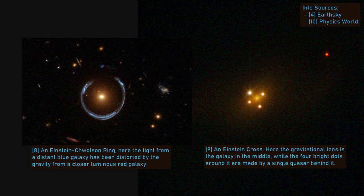However, if the three objects are not in perfect alignment, we see partial arcs, or just spots. In these cases, each of the spots consists of a separate route of light from the source. Sometimes the three objects can be in just the right misalignment, and four spots appear around the gravitational lens — this is called an Einstein cross.